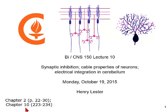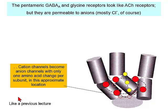Here are the readings. Many of the illustrations in today's talk come from Kandel, so you can peruse those chapters as well. We're going to talk about the pentameric GABA and glycine receptors. As we'll see, they look a lot like acetylcholine receptors at the nerve muscle synapse, which is a model for all sorts of aspects of synaptic transmission, both function and development.